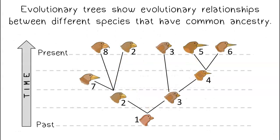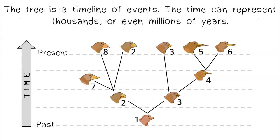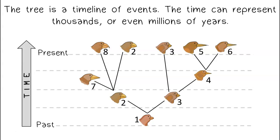Evolutionary trees show evolutionary relationships between different species that have common ancestry. The tree is a timeline of events, and the time can represent thousands or even millions of years.